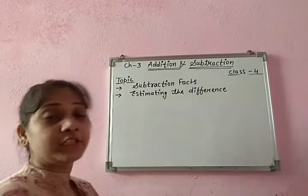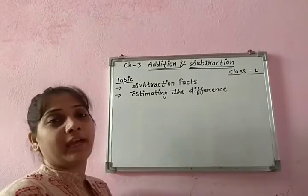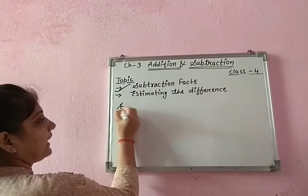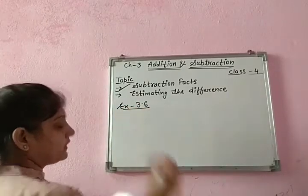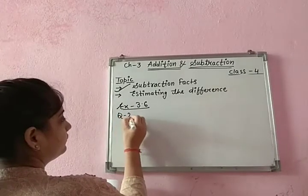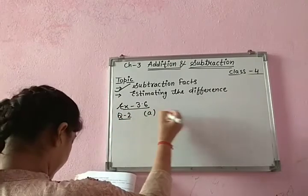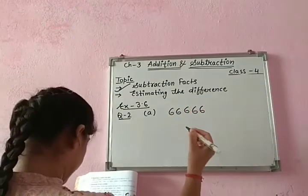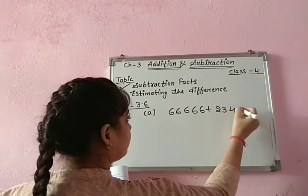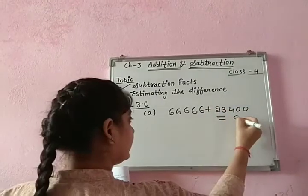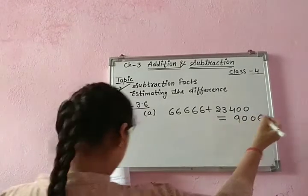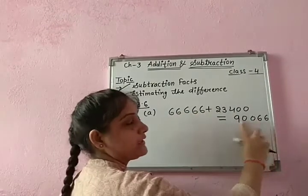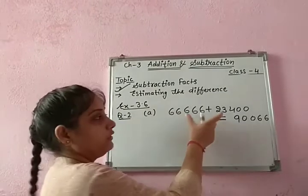In this question, one addition is given and for each addition you need to write two subtraction facts. So first we are doing how to write the subtraction facts — Exercise 3.6, question number 2, first part. The question is 66,666 plus 23,400 gives us 90,066. This addition is given to us.